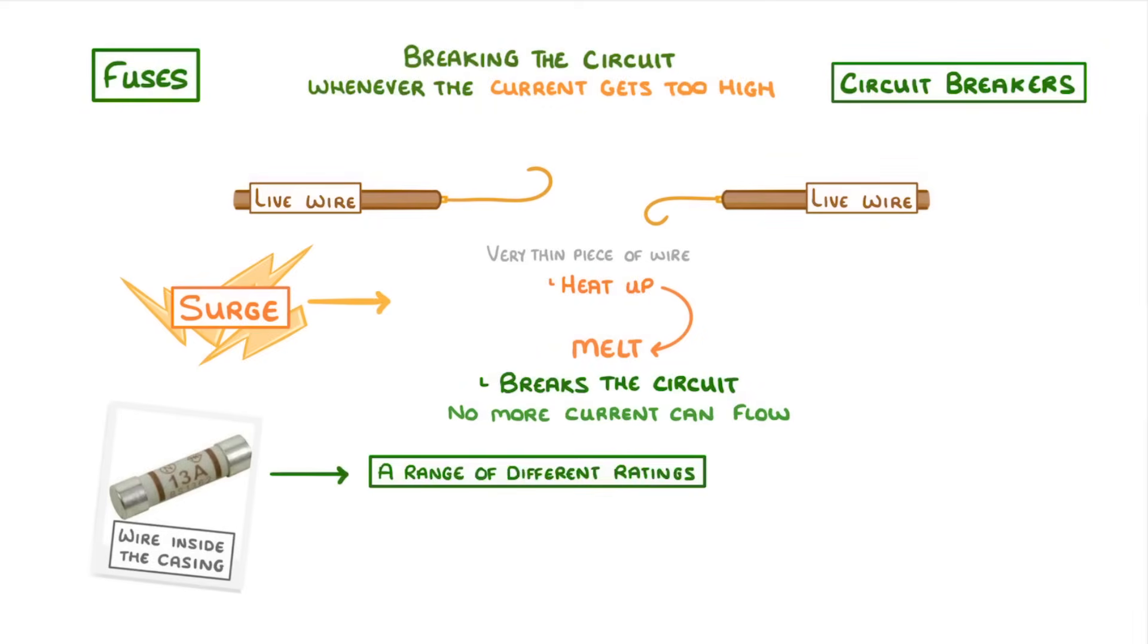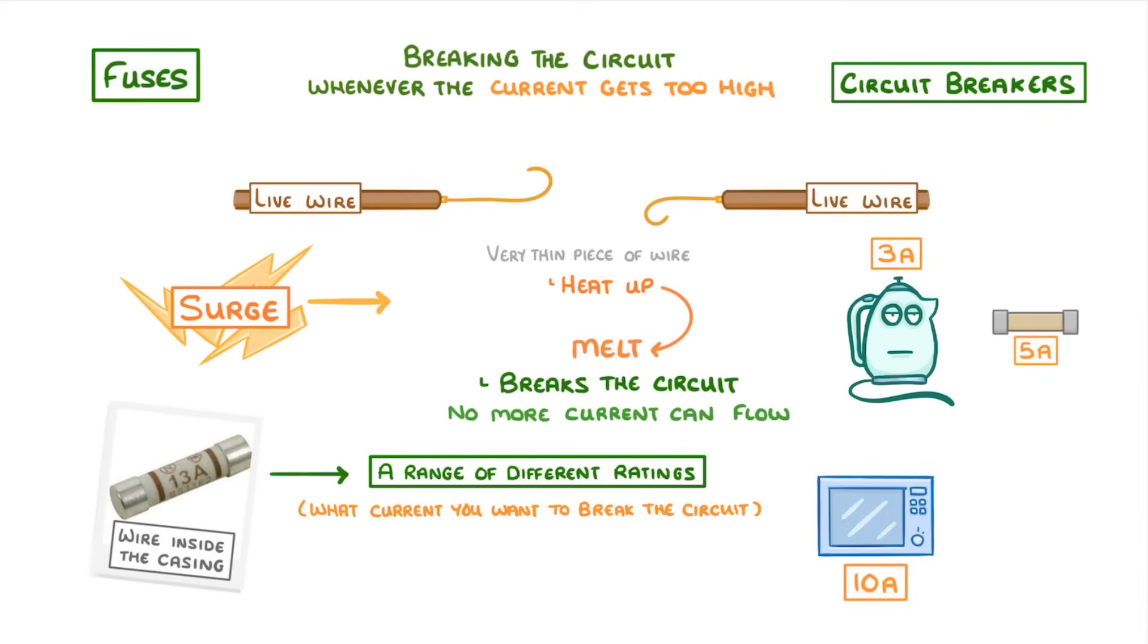We get fuses in a range of different ratings, depending on what current you want to break the circuit. For example, if you have an appliance that normally has a three amp current flowing through it, then you could use a five amp fuse so that it only breaks when there's a surge that makes the current rise above five amps. On the other hand, if you had a 10 amp appliance, you might use this 13 amp fuse instead. Basically, the fuse always wants to be a couple of amps above the rating of your appliance.